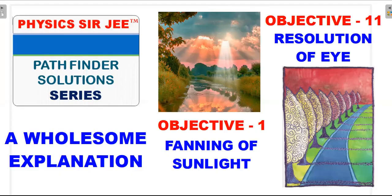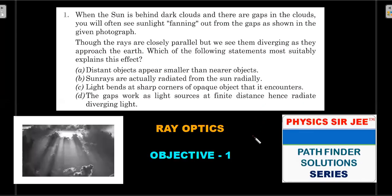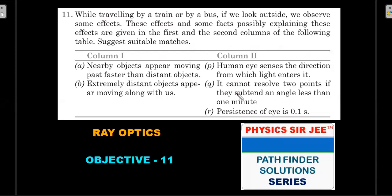Let me present the formal wording of the two questions. If you haven't gone through these before, I'd request you to pause the video, have a read, try to attempt it for two or three minutes, and then come back for the step-by-step explanation. The first one is Objective Number 1 from the topic of ray optics, and the second is Objective 11, a match-the-following type question with two items in column one and three concepts in column two.